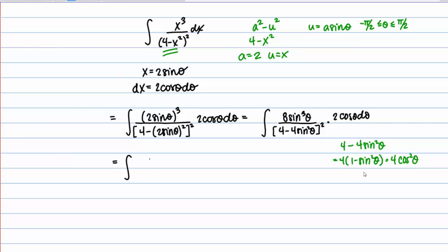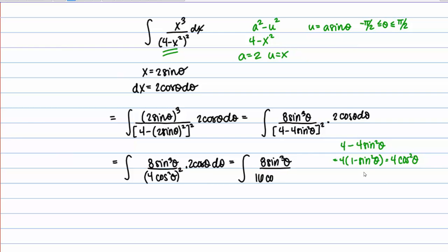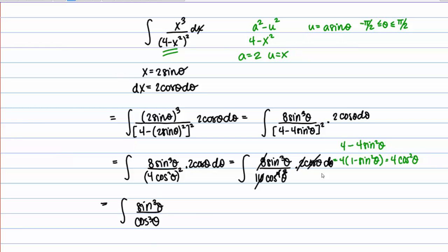Rewriting further, we have 8 sine cubed of theta over 4 cosine squared of theta, that whole quantity squared, times 2 cosine of theta d theta. Squaring the denominator gives 8 sine cubed of theta over 16 cosine to the fourth of theta, times 2 cosine theta d theta. The 8 and 2 in the numerator multiply to 16, which cancels the 16 in the denominator. One cosine in the numerator cancels with four in the denominator, leaving 3. We're left with the integral of sine cubed of theta over cosine cubed of theta d theta.